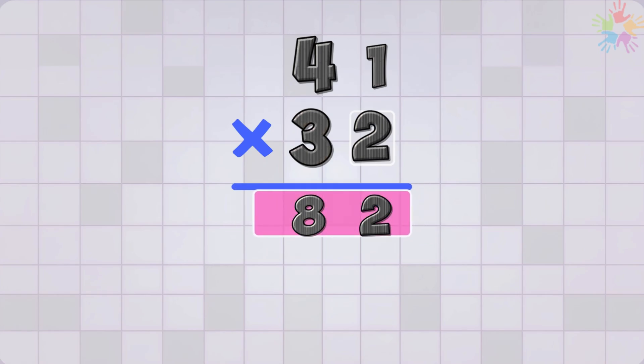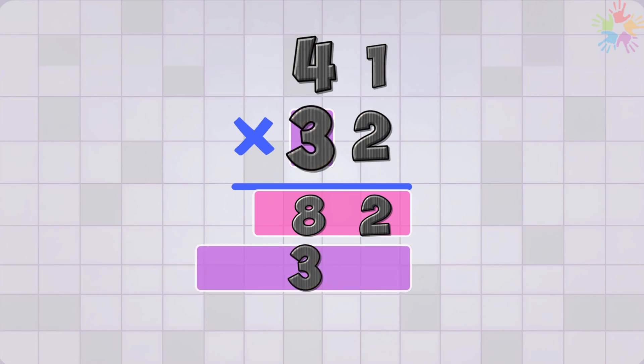Now move to the next digit, which is 3. Now multiply. 3 times 1 equals 3. Write it. Then 3 times 4 equals 12. So our second row becomes 123.